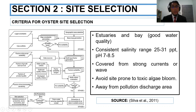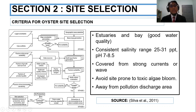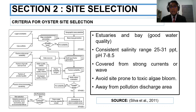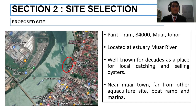If the site is suitable, we go to stage three, which determines what type of culture system can be used in the feasible area. Basically, oyster is farmed in estuaries and bays with good water quality, consistent salinity range of 25 to 31 ppt, pH between 7 to 8.5. The site must be sheltered from strong currents or waves and must avoid toxic algae blooms and pollution discharge from industrial areas.